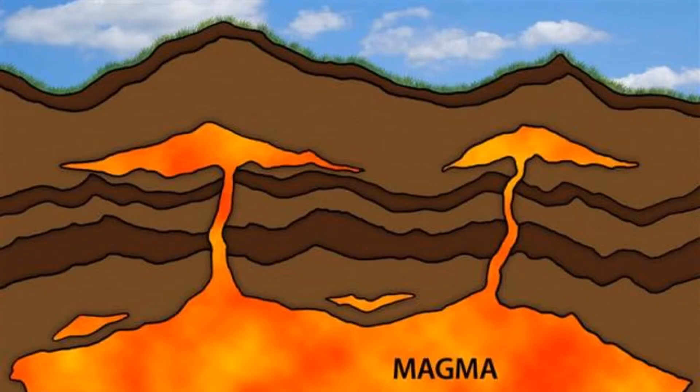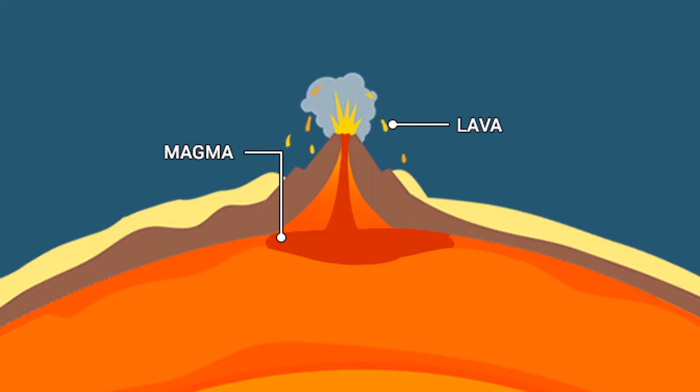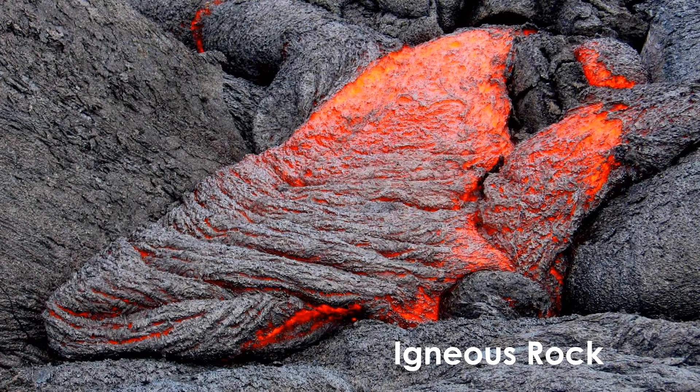Magma migrates upward through the Earth, where it may cool beneath the surface, becoming an intrusive igneous rock. Magma may also rise and erupt from the surface of the planet at volcanoes. When magma reaches the surface through volcanic vents, we call it lava. As lava cools, it turns into what we call an extrusive igneous rock.